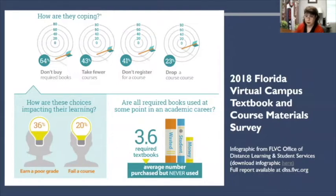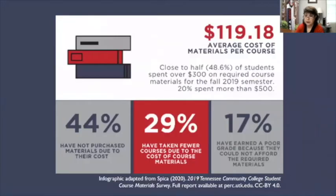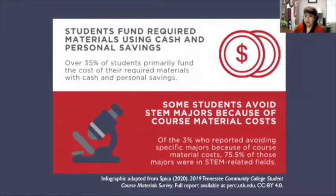Similar findings have been reported nationally, including most recently from the U.S. Public Interest Research Group, which indicates 65% of students are still avoiding buying their course materials because of cost. During the current pandemic, it is even more crucial for students to be able to afford and have access to course materials at the beginning of their courses. For our higher education students in Tennessee, we know that students are avoiding buying textbooks, taking fewer courses, earning poor grades, and even avoiding certain majors because of the high cost of textbooks.